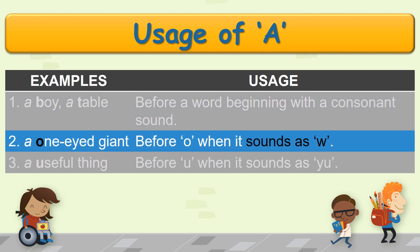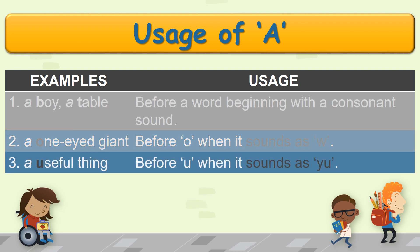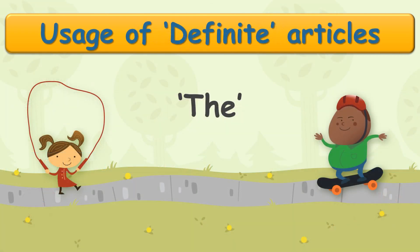'A' is placed before 'one' — but why? O is a vowel, so it should be 'an one', isn't it? No. 'One' begins with a consonant sound V, therefore we say 'a one-eyed giant'. 'A' is also placed before words starting with U, because even though U is a vowel, it is starting with a consonant sound Y.